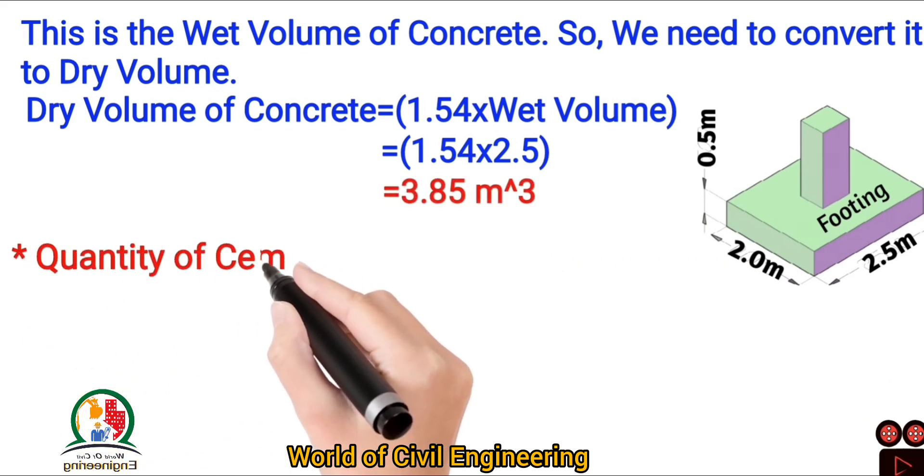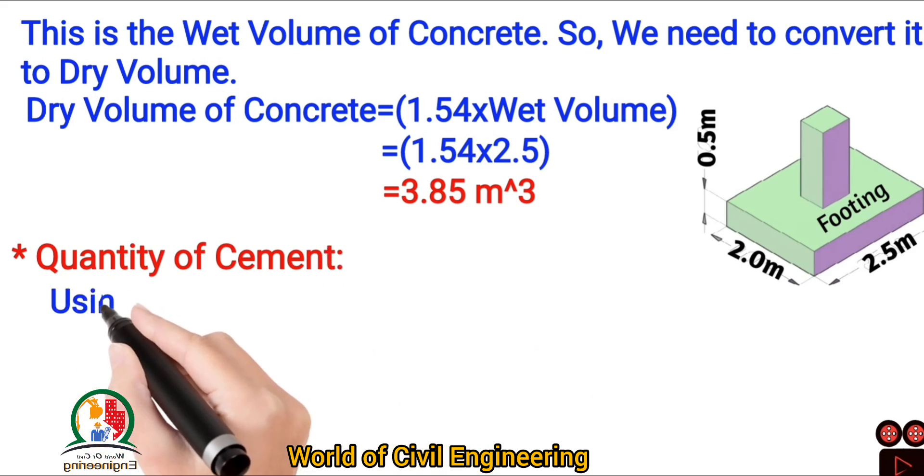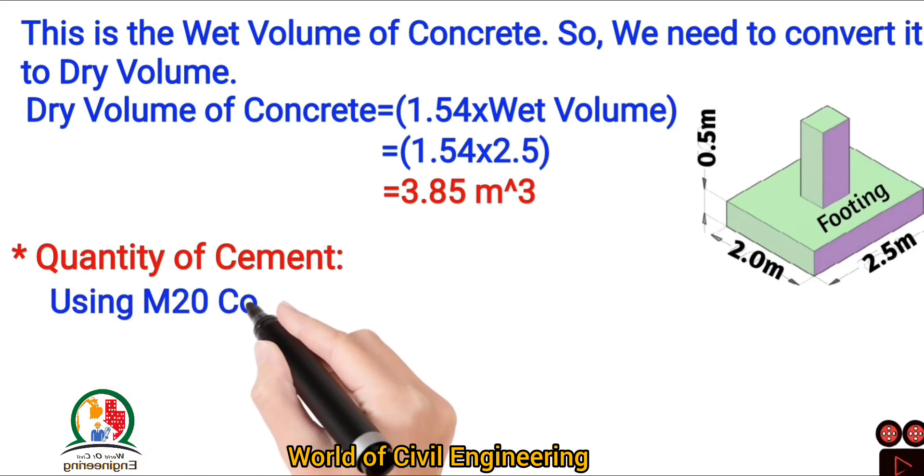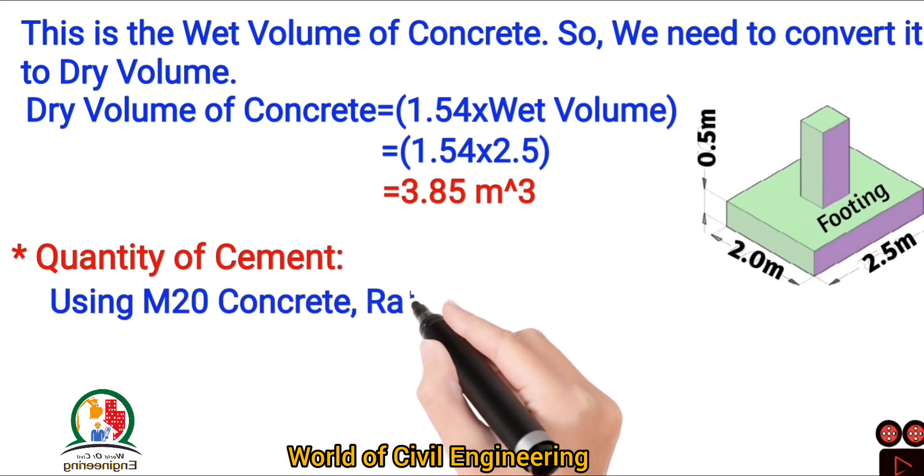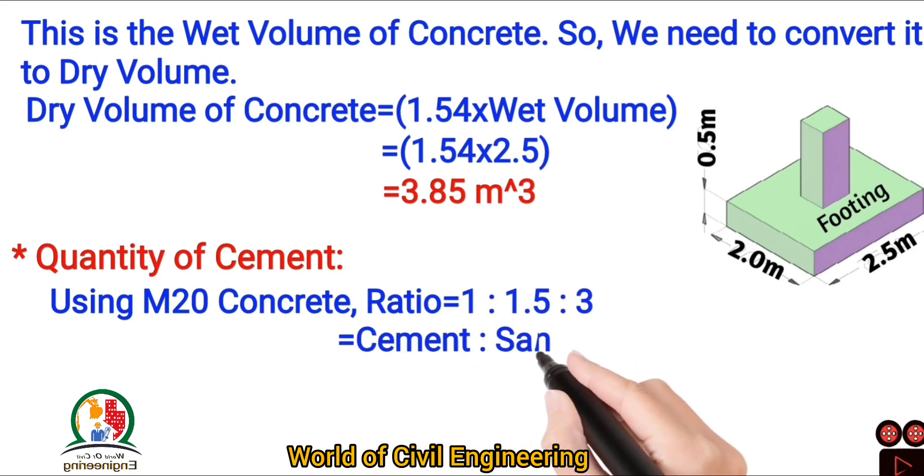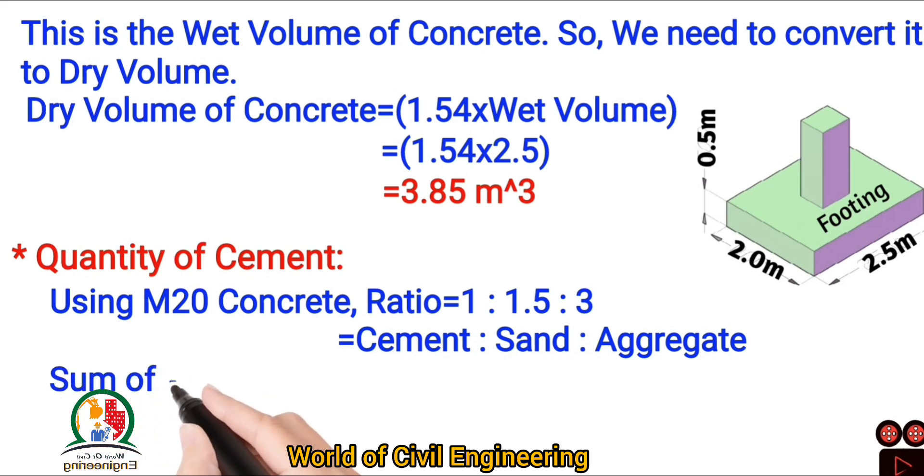Now we have to calculate the quantity of cement. We are using M20 concrete, so the ratio will be 1 is to 1.5 is to 3 equal to cement is to sand is to aggregate. Sum of ratio will be 1 plus 1.5 plus 3 equal to 5.5.